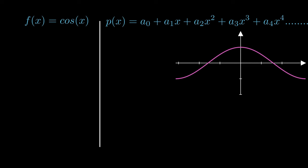Plugging in x equals 0, all terms get 0 except a0, which must be 1 to resemble f of x. Now, how do we find other coefficients then?